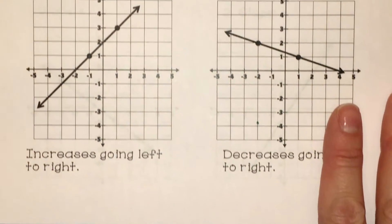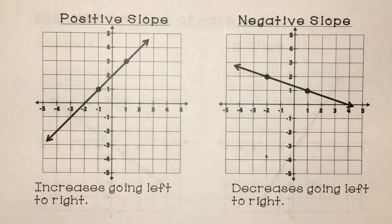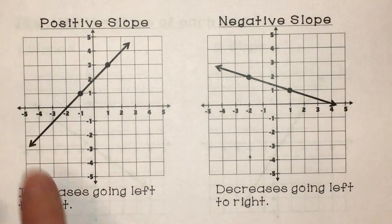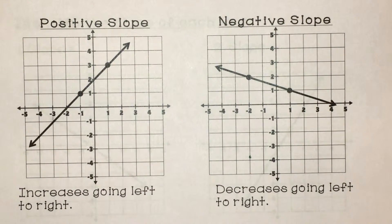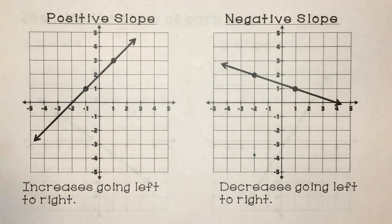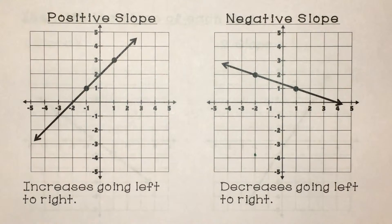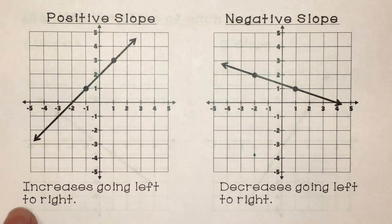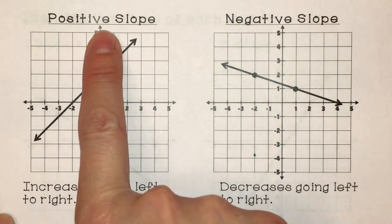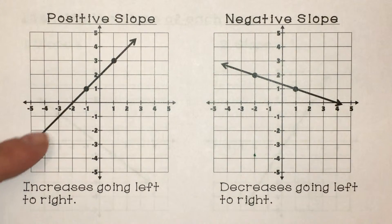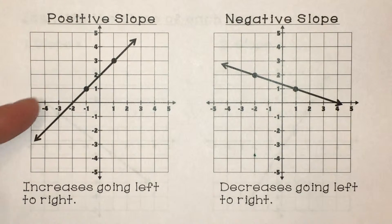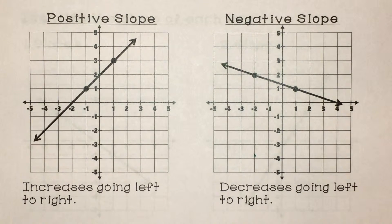So we can find the slope, but now let's look at whether our slope is positive or negative. When you read a graph — and the graph is the line itself, not the coordinate grid — we always read the graph from left to right, like we read a sentence. This graph has a positive slope because if I go left to right, it's increasing — it's going up — meaning the slope is going to be positive.